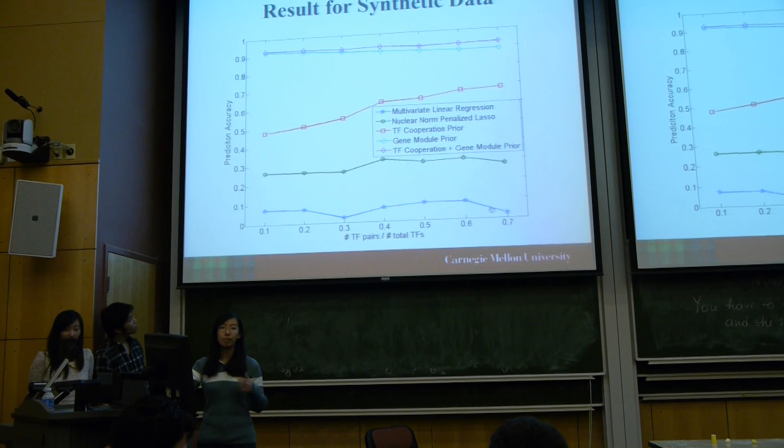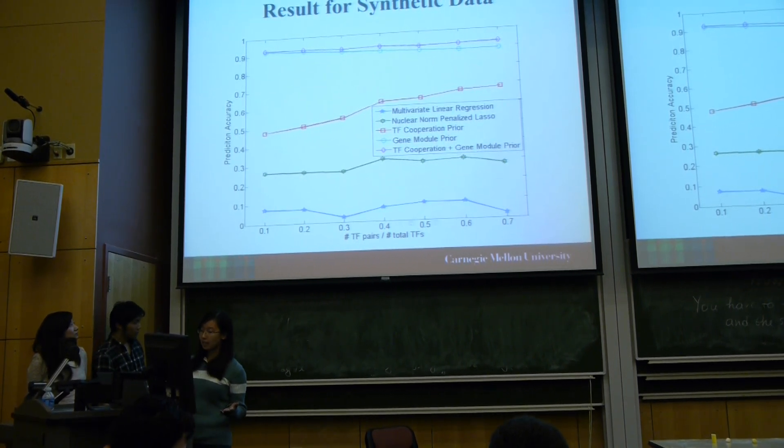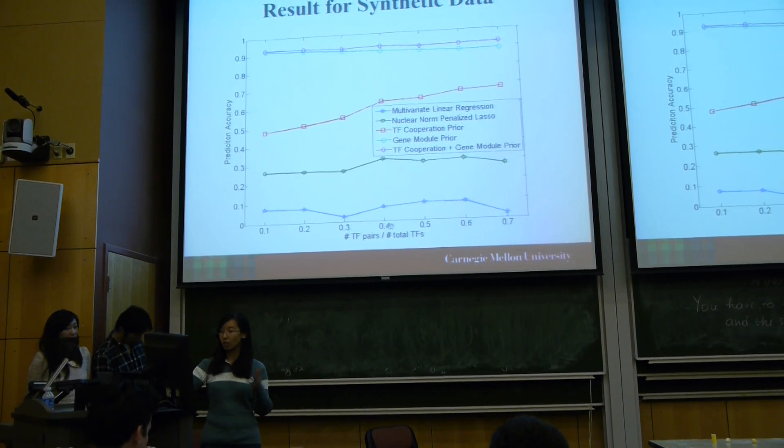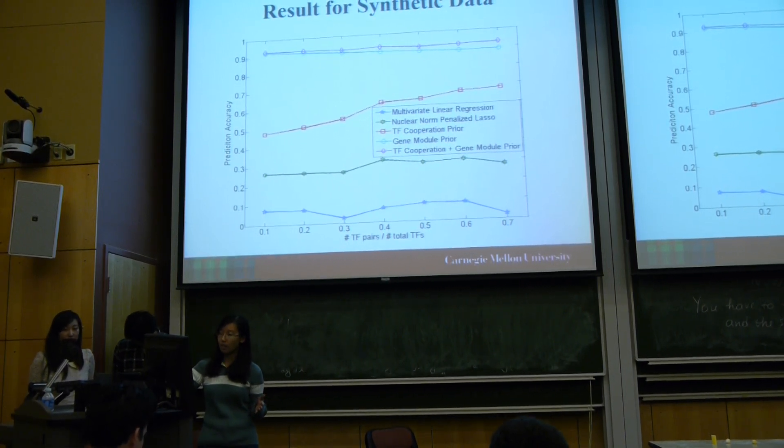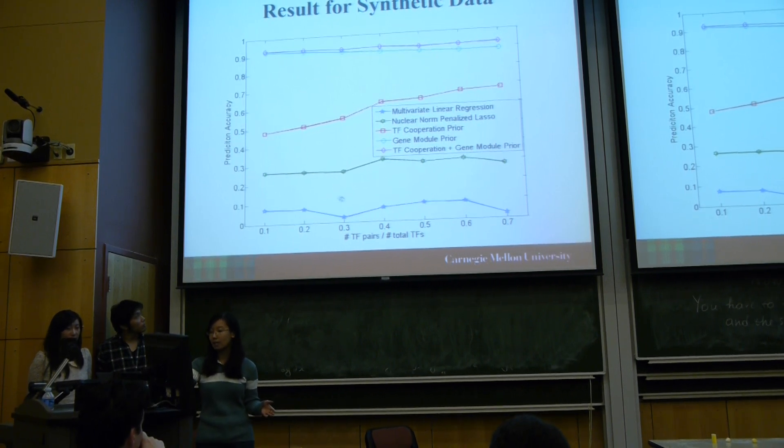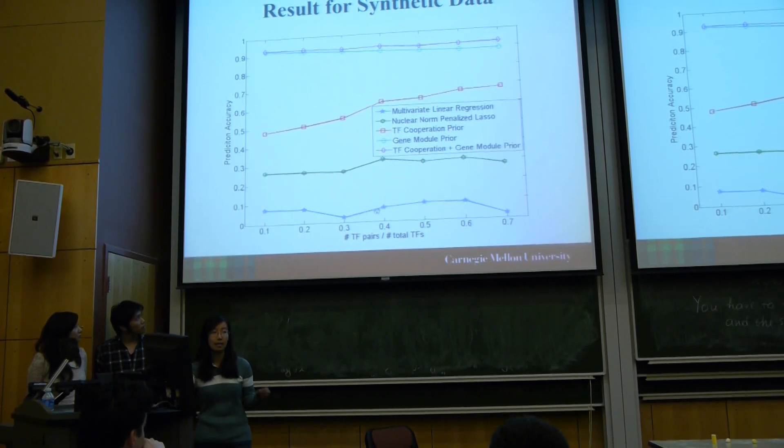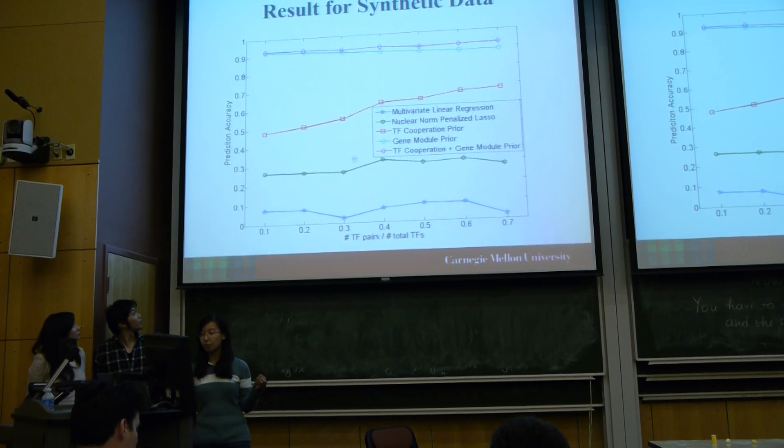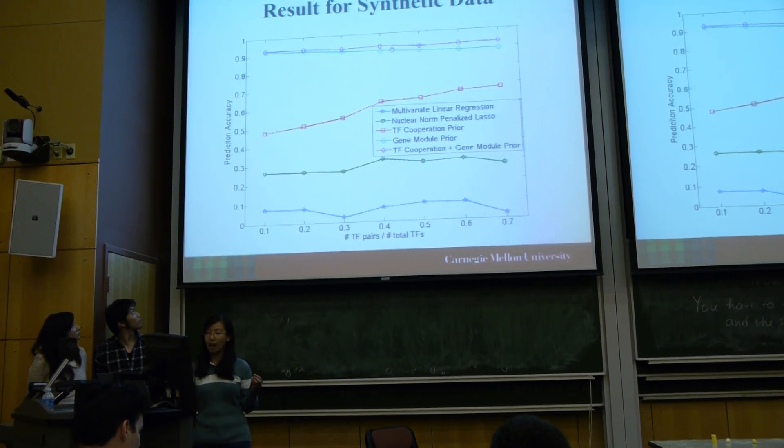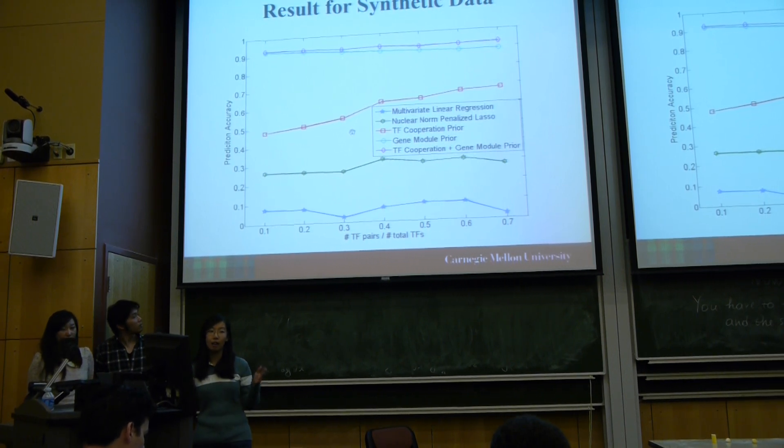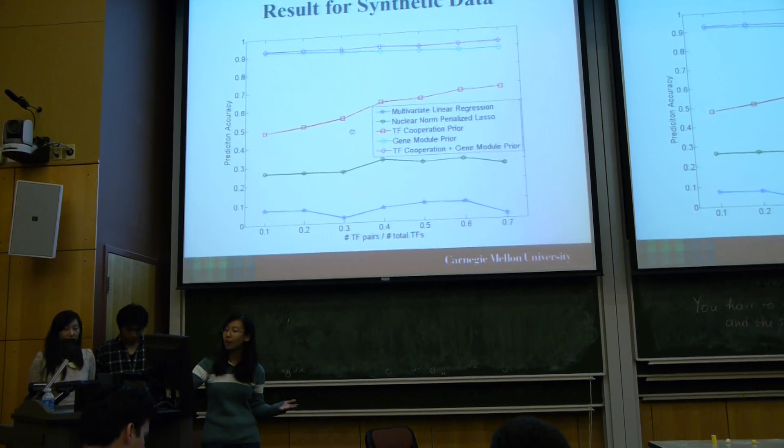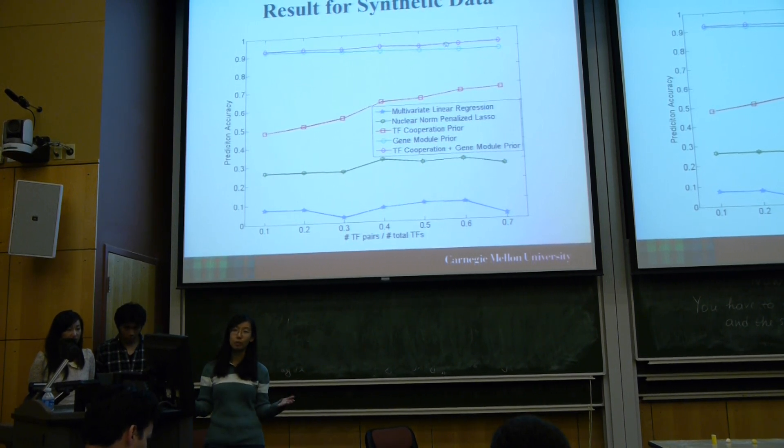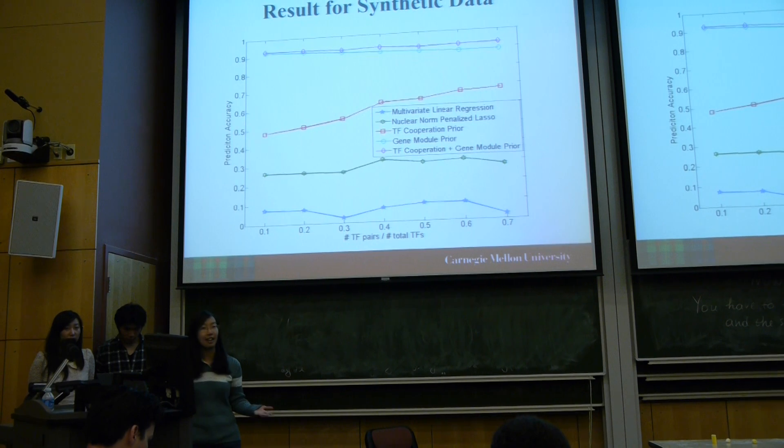We're implementing all these methods on our synthetic data. Here is how many transcription factor pairs for the total transcription factors, and this is our performance accuracy. The blue line is our baseline with lower prediction accuracy. These three lines show implementing separate prior knowledge, and the performance improves. The top one implements all prior knowledge together, getting a much better result.